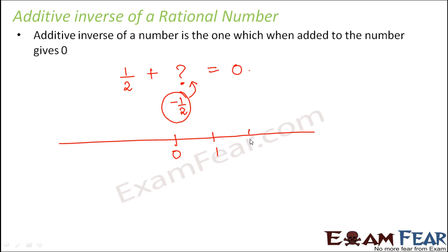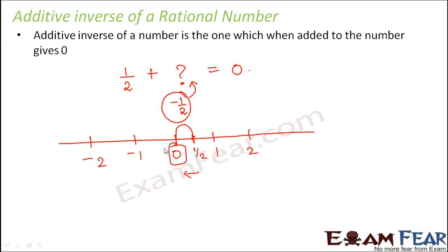Let's say this is 0, 1, 2. On this side you have minus 1, minus 2. So somewhere here you would have 1/2. Now 1/2 plus minus 1/2 — since it is minus, you will move towards the left. And how many steps? One step, and each step is 1/2. So each step of 1/2 will take you here, and what is here? You have 0. So on the number line it clearly proves that 1/2 plus minus 1/2 gives 0.